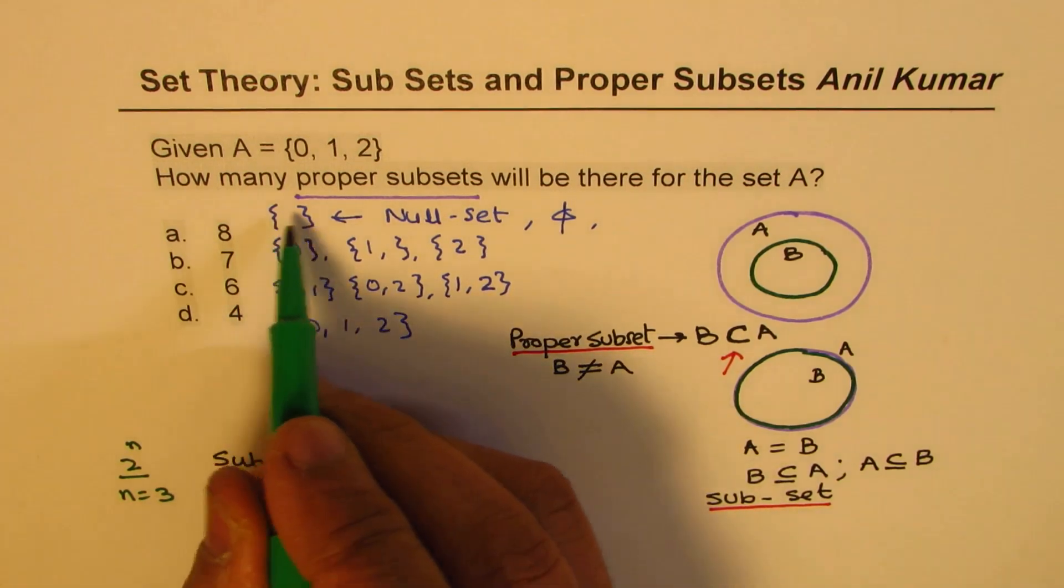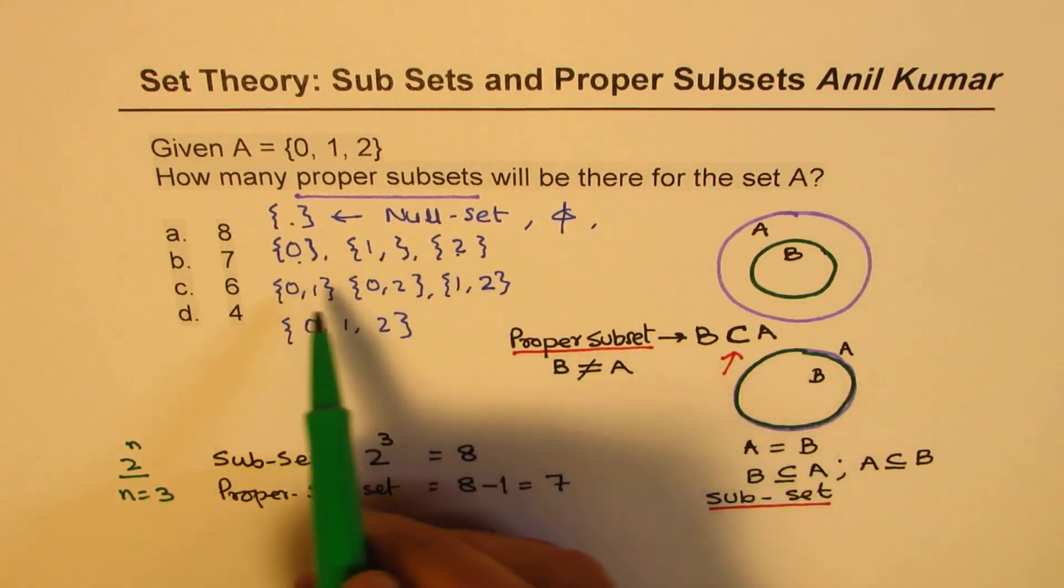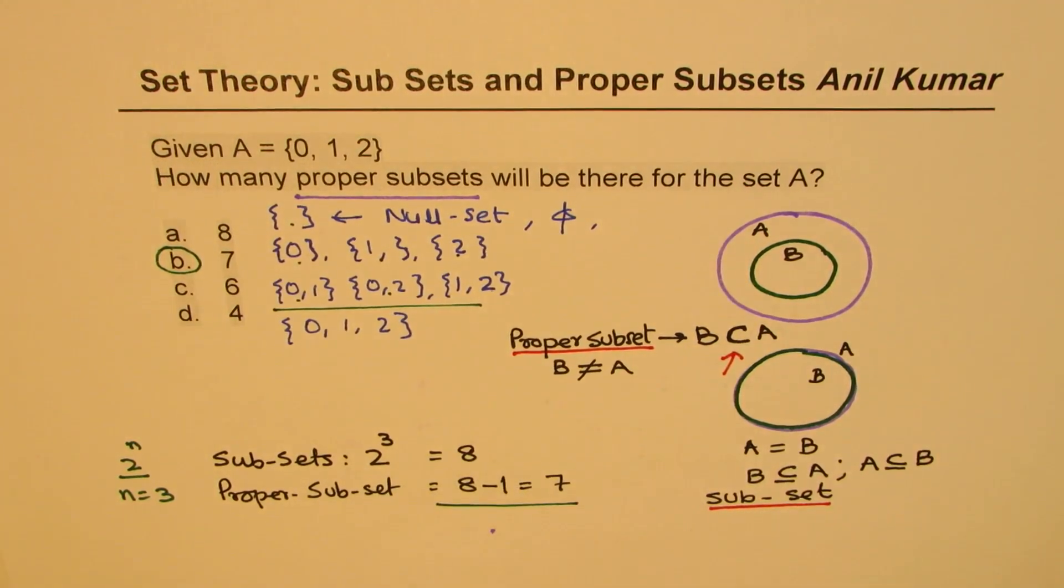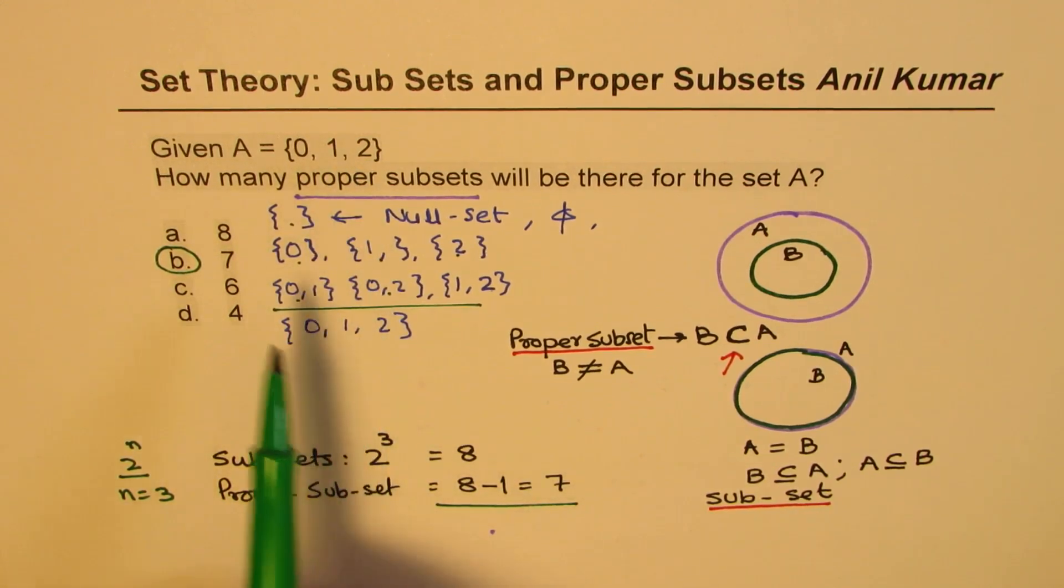Now all these are proper subsets: one, two, three, four, five, six, and seven. So the answer is seven as we calculated here. Do you see that the eighth set is a subset but not a proper subset since it is equal to the set A? So I hope you get the concept.